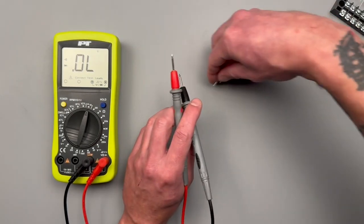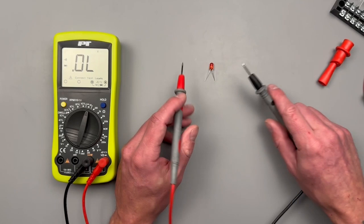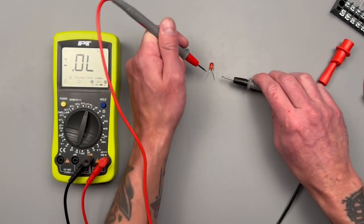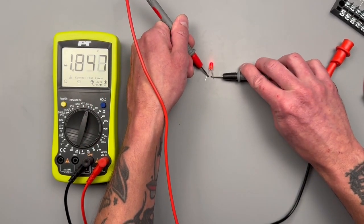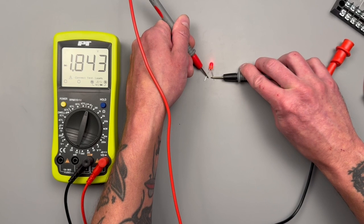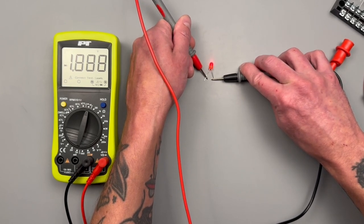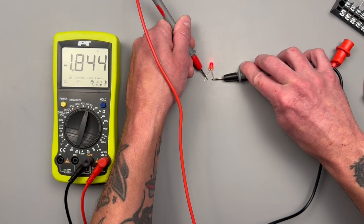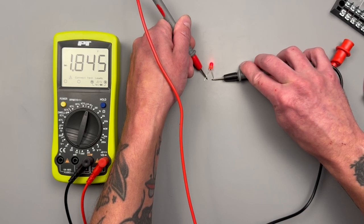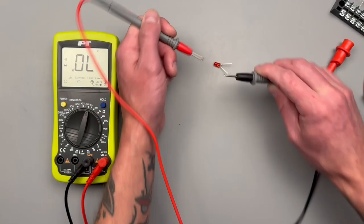You can also use this to check LEDs. The long leg of our LED is going to be the anode and the short's going to be our cathode. It actually puts out enough voltage to illuminate the LED. The voltage that's being displayed there is our forward voltage or minimum turn on voltage. So this LED requires 1.8, 1.9 volts to illuminate.